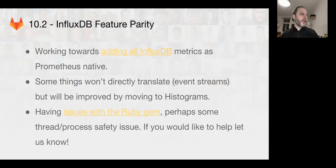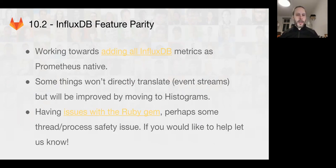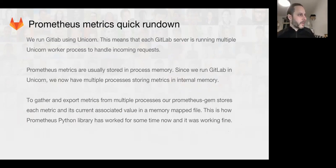We had to disable a few things that were a bit excessive for the Prometheus metrics. We've also been having a number of issues with the Ruby gem that generates the metrics. We are still working on this — it is close to being done.